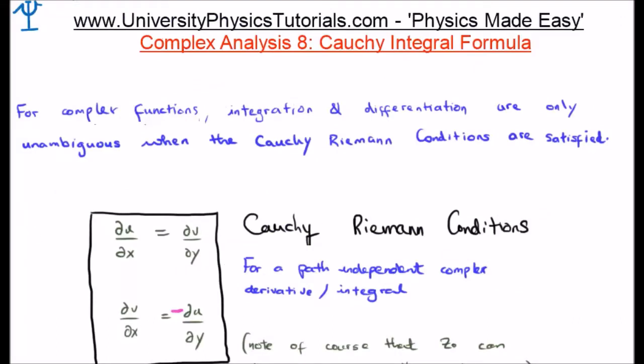So let's begin. In order for a complex function to have unambiguous integration and differentiation, the Cauchy-Riemann equations, or Cauchy-Riemann conditions, must be satisfied. I've written those at the bottom left of your screen. Del u del x equals del v del y. Del v del x equals minus del u del y.